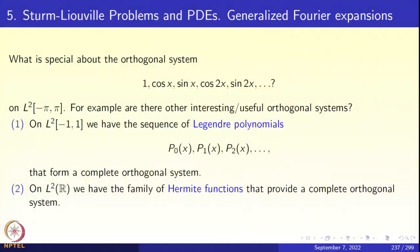What is special about the orthogonal system {1, cos x, sin x, cos 2x, sin 2x, ...} on L2 of (−π, π)? Are there other interesting or useful orthogonal systems? For example, on L2 of (−1, 1) — a Hilbert space — we have a sequence of Legendre polynomials P₀(x), P₁(x), P₂(x), ..., where Pₙ(x) is a polynomial of degree exactly n. These polynomials form an orthogonal system: the integral from −1 to 1 of Pₙ(x)Pₘ(x)dx is 0 if m ≠ n.